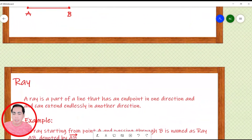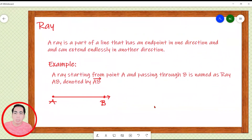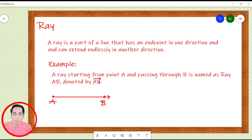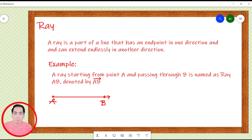Let's proceed to our next figure, which is a ray. A ray is also a part of a line that has an endpoint in one direction and can extend endlessly in another direction. For example, a ray starting from point A and passing through B is named as ray AB, denoted by the symbol above the two letters. A ray can be extended in one direction only and has an endpoint in the other direction. Point A is the endpoint of the ray, while in the other direction we can extend the line endlessly. In naming a ray, we have to follow the direction through which we can extend the ray — so we can name this as ray AB, but we cannot name this as ray BA.